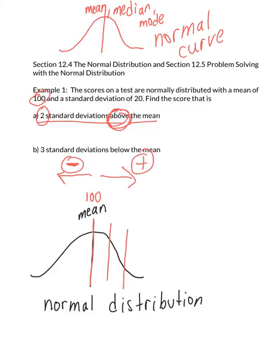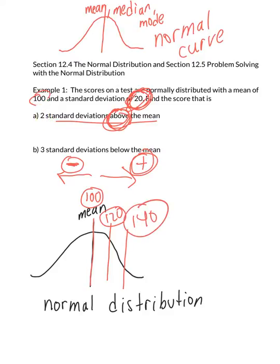Since part A says above, meaning I'm moving to the right, I'm going to be adding repeatedly. If I hop once to the right from the middle, 100 plus the standard deviation of 20 gives me 120. I want two hops above the mean, so I hop again: 120 plus 20 gives me 140. So visually, two hops to the right above the mean lands at 140. That's the final answer.